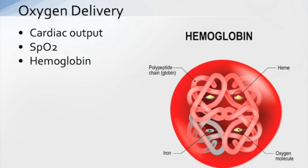Oxygen delivery is also dependent upon hemoglobin. We need an adequate amount — many of our patients are anemic, so they'll have difficulty getting enough oxygen to the tissues. In addition to having hemoglobin, the patient also needs to connect oxygen to it. Think back to the oxyhemoglobin dissociation curve: three things affect oxygen's ability to bind to hemoglobin — carbon dioxide level, fever, and body temperature. We need to optimize those three things as well.